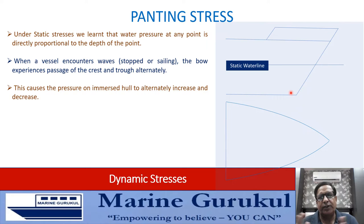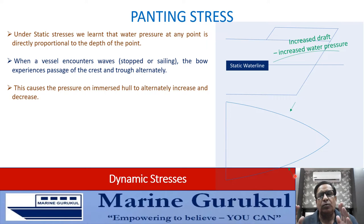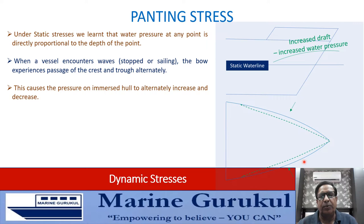Considering a point on the ship's hull below the static waterline: when the bow encounters a crest, the draft increases, increasing the depth of that point. Therefore, the water pressure on the hull plating increases inwards, shown by green arrows, tending to deform the plating inwards relative to its static condition — as shown by the green broken line. The crest then passes and the trough reaches the bow.